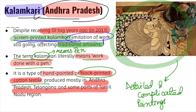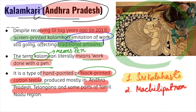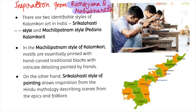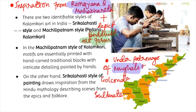There are two unique techniques of Kalamkari painting: the first is Srikalahasti style and the second is Machlipatnam style. Kalamkari painting usually draws inspiration from Ramayana and Mahabharata, but in recent times it has also depicted Buddhist art forms. These paintings were developed under the patronage of the Mughal and Golconda Sultanate.